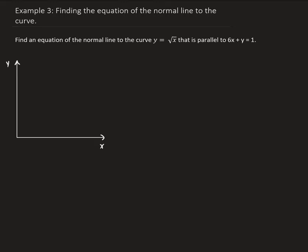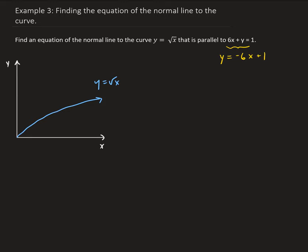So we have the curve y equals square root of x, so that's going to look something like this. We can redraw it a little bit better. And we have a line here. So if we put this into mx plus b form, we're going to get y equals minus 6x plus 1. So that is a line with a slope of minus 6 and a y-intercept of 1.